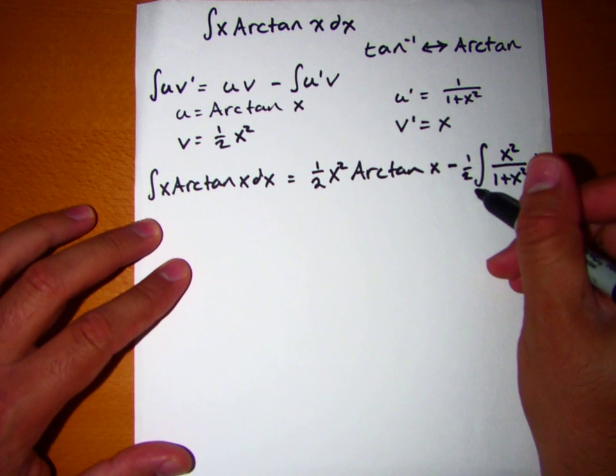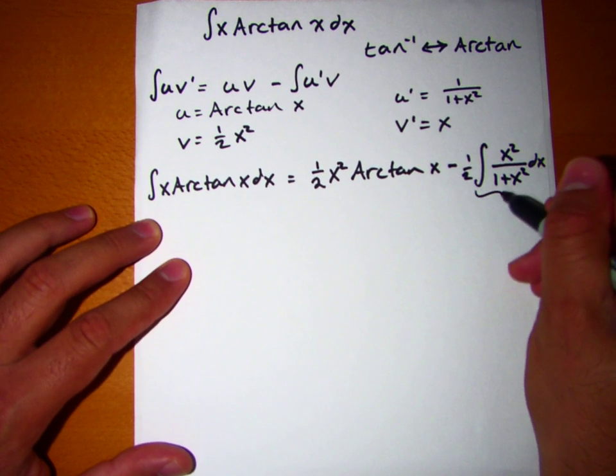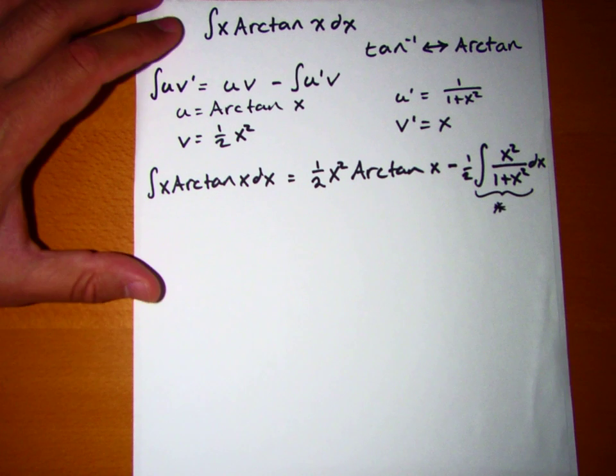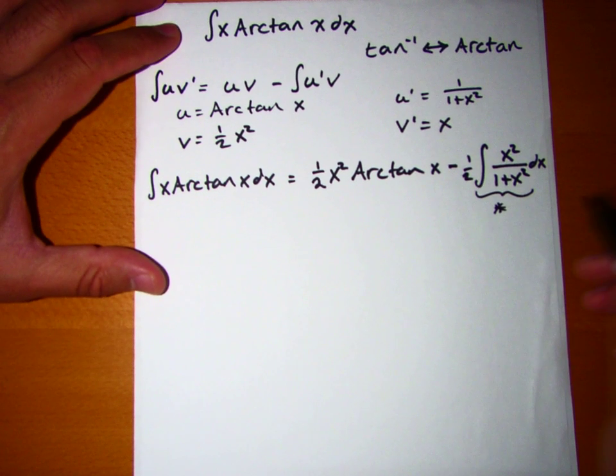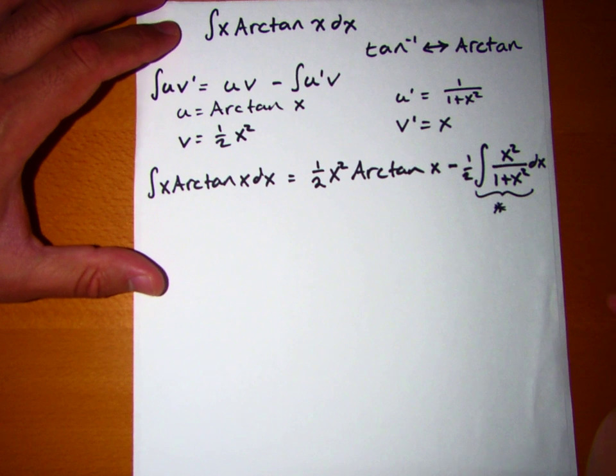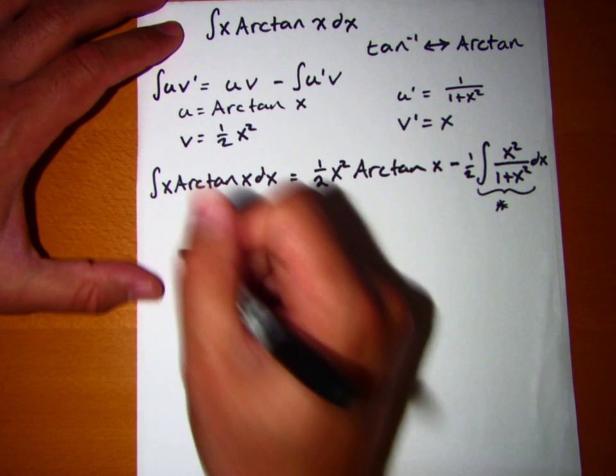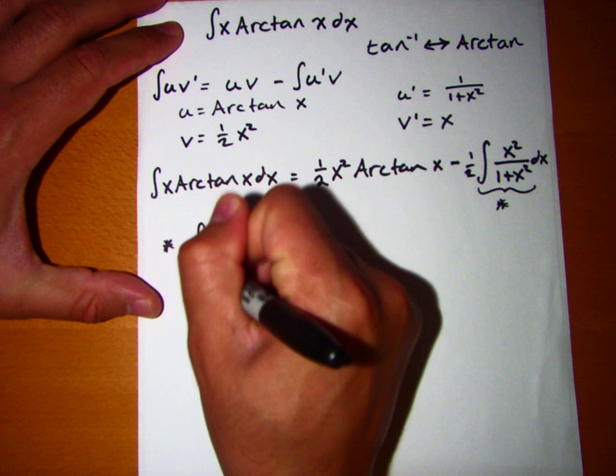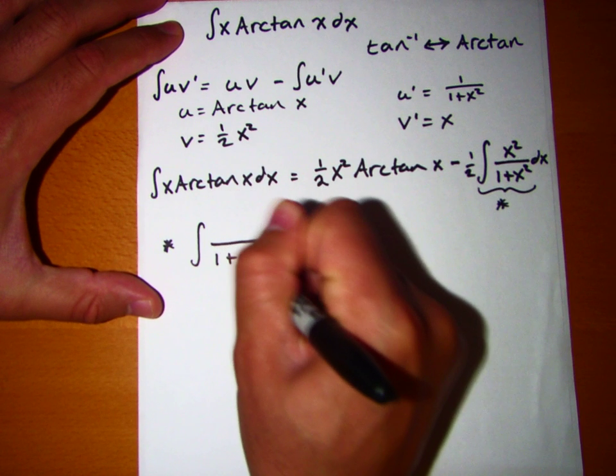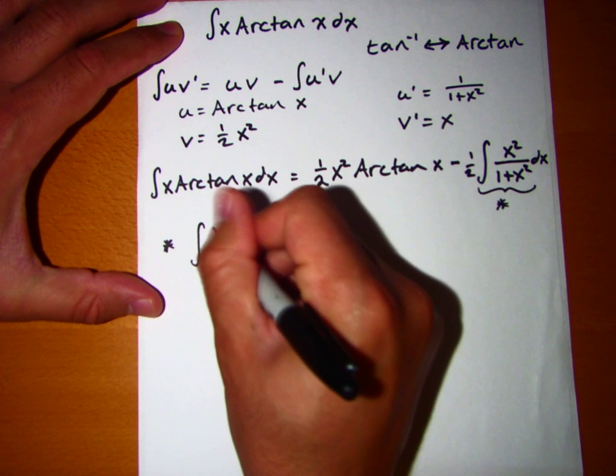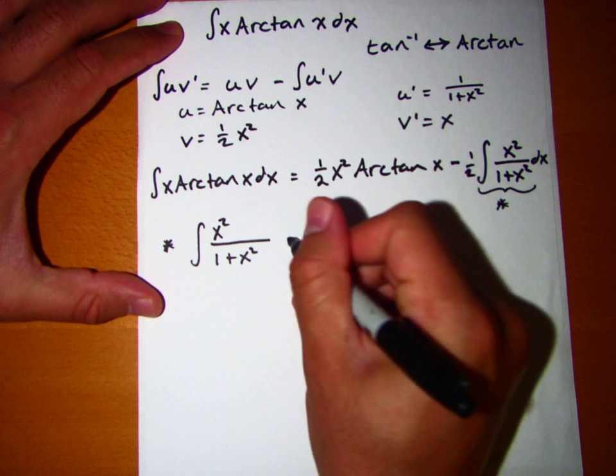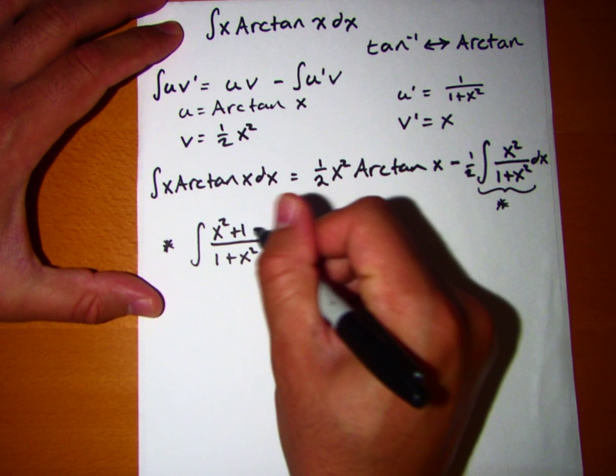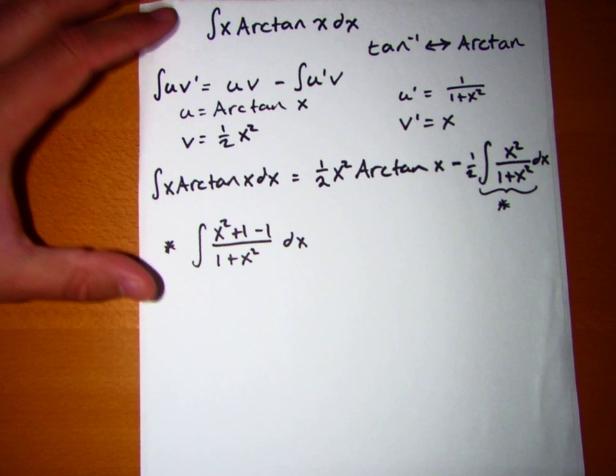So if we look at this second integral here, just this right here, that's actually, apparently, at the surface that doesn't look very easy to solve, but if we take a look at it, and we say, well hey, let's add 1 and then subtract 1, without changing the value of the thing.